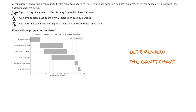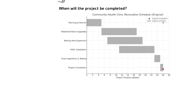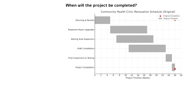Let's start with reviewing the Gantt chart first. If you are going to take the PJM exam, you should expect a few similar questions like this. A Gantt chart technically shows the duration of different activities in a bar graphic. Here we see that planning and permits is going to take five weeks, treatment room upgrades is going to take 12 weeks, waiting area expansion is going to take another 12 weeks, and HVAC installation is also going to take 12 weeks. Final inspections and testing is going to take two weeks.